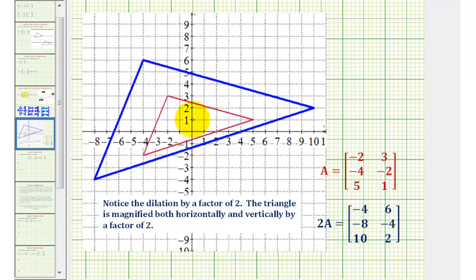Notice how the red triangle, or the small triangle, has vertices from matrix A, and the larger blue triangle has vertices from matrix 2A.